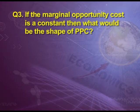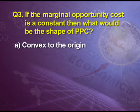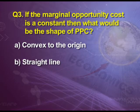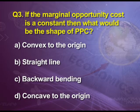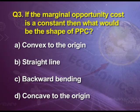Question 3: If the marginal opportunity cost is constant, what would be the shape of PPC? Options: convex to the origin; straight line; backward bending; or concave to the origin. The answer is B — it will be a straight line. Remember, it will be a downward sloping straight line, not upward, and from left to right, not right to left.